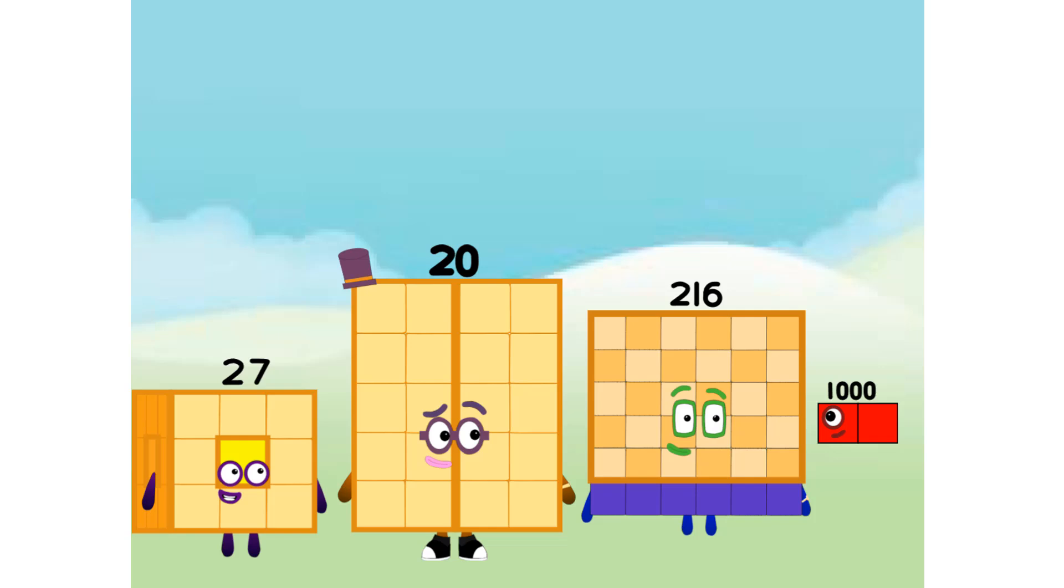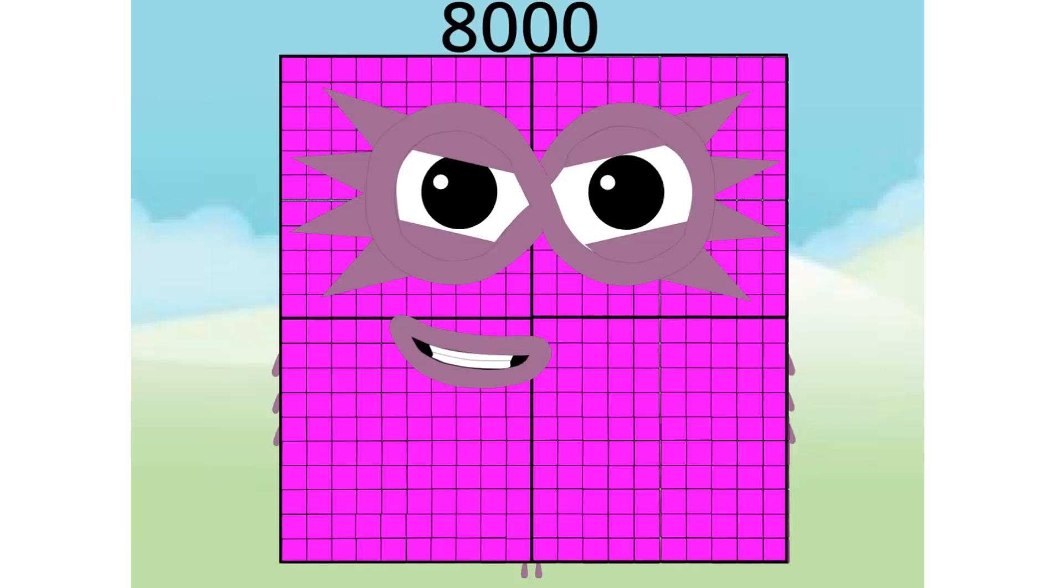What if we do 20 cube? What will that look like? Um, that means there will be three of me. Number block 20. I am 8,000. I am 1,000 octoblock to the rescue. I am 20,